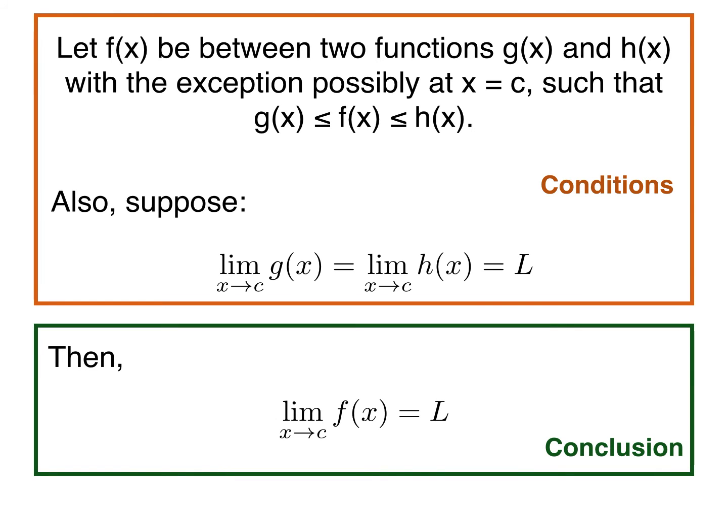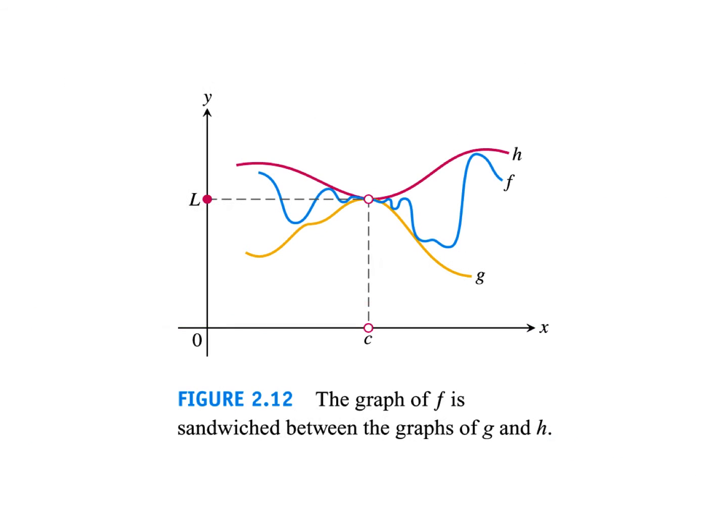Then we can conclude that the limit as x goes to c of f(x) equals L. Here's a picture. You can see that we have a function h which is always larger than the function f with the exception possibly at the point c, and g is always smaller than the function f.